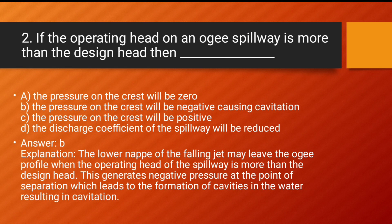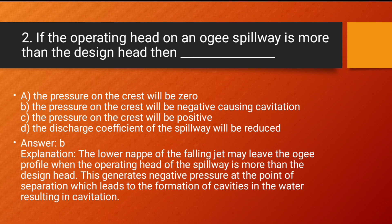Answer: Option B. Explanation: The lower nappe of the falling jet may leave the Ogee profile when the operating head is more than the design head. This generates negative pressure at the point of separation, which leads to the formation of cavities in the water, resulting in cavitation. So Option B is the correct answer.